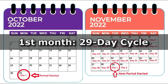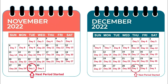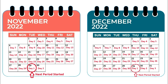For the second month, the period started November 29th, which is cycle day one, and we're going to count until December 28th. Remember, we stop the day before that next period started. That gives us a cycle length of 30 days for that month.